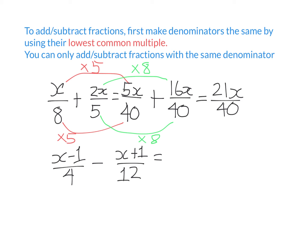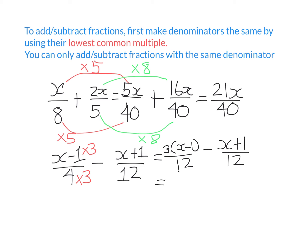Let's look at a harder example. The denominators are not the same — the lowest common multiple of 4 and 12 is 12. So I need to give the first fraction a denominator of 12. I multiply that denominator by 3 (4 times 3 is 12), and by the golden rule I must multiply the top by 3 as well — so it becomes 3 times (x minus 1) over 12. The second fraction already has denominator 12, so I leave it unchanged. Expanding gives 3x minus 3 over 12.